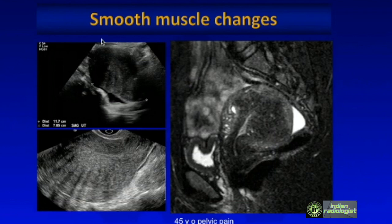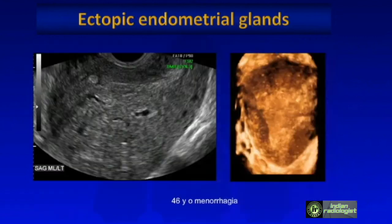Here is an example of smooth muscle changes: an enlarged, globular uterus with streaky shadowing from the posterior myometrium — the Venetian blind appearance. The MRI here confirms marked thickening of the junctional zone in this patient with adenomyosis, who presented with pelvic pain. Another example shows endometrial glands extending into the myometrium with echogenic nodules and lollipop-type cystic areas.